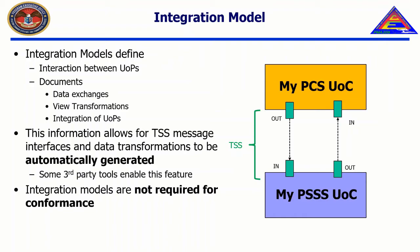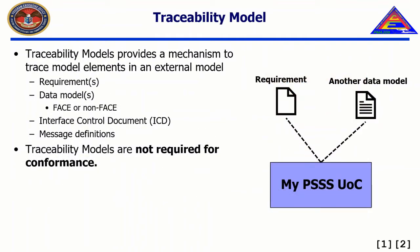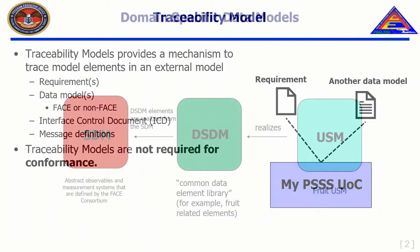It is important to note that the integration model is not required to achieve FACE conformance. However, if an integration model is provided, errors in the integration model will reflect as errors in the conformance process. Traceability models provide a way to map external sources to the FACE data architecture. For example, if a UOP is written to meet a specific requirement, it may be beneficial to define a relationship between the instance of the FACE UOP and the requirement. Other examples of external model mappings could be other data models, either FACE or non-FACE, interface control documents or ICDs, and message definitions. The traceability model is not required to achieve FACE conformance; however, if a traceability model is provided, errors in the traceability model will reflect as errors in the conformance process.